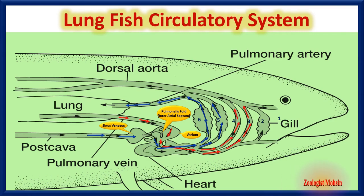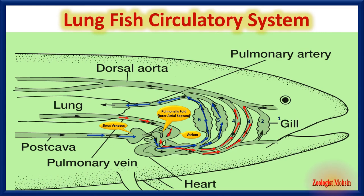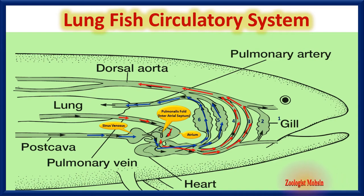The first two gill arches have the same function as in other fishes. In summary, gill arches numbers one, two, five, and six have gills, but arches three and four do not — which is an adaptation toward land habitats. After entering the dorsal aorta, the procedure is the same as discussed earlier.